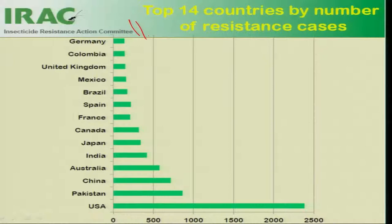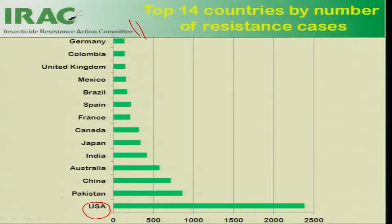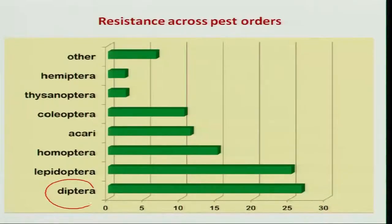The IRAC — Insecticide Resistance Action Committee — compiled the top 14 countries where cases of insecticide resistance have been reported. Looking at this graph, the USA dominates with 2,400 species of insects reported having resistance to various insecticide groups, followed by Pakistan. India is fifth in the ranking with around 450 species showing resistance. In terms of insect groups, Diptera recorded the maximum number of resistant species, followed by Lepidoptera and Homoptera.